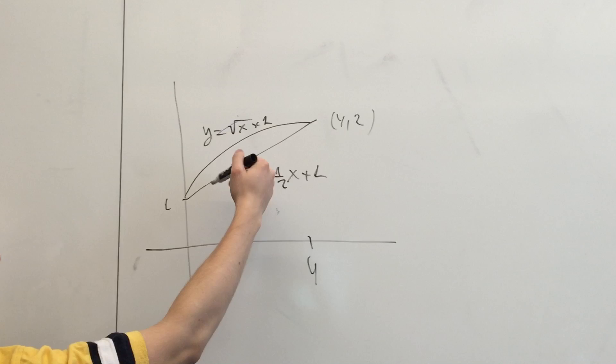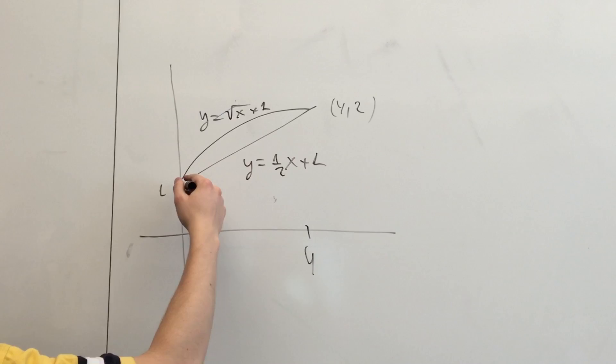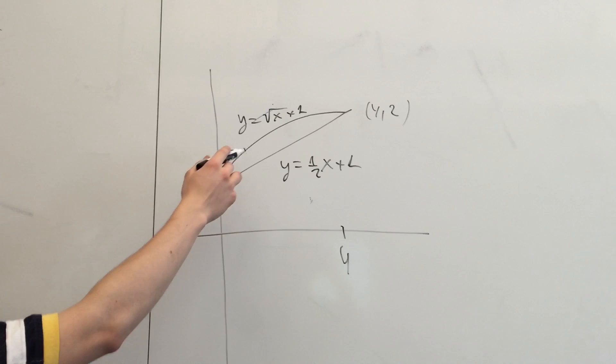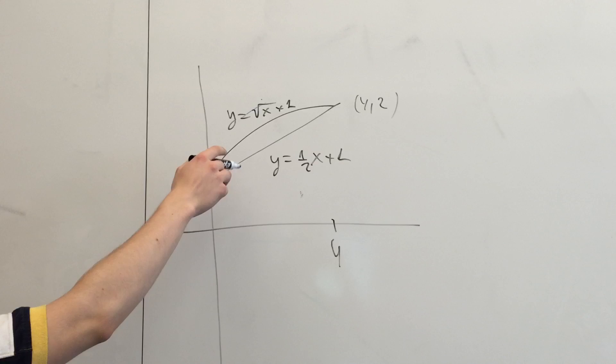To find the average speed of the fish relative to the shore, first we'll have to subtract the speed of the current from the speed of the fish, then take the average value of it.